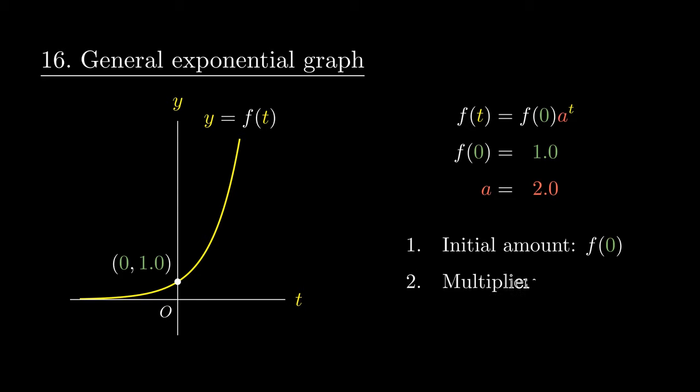Once again, setting a as the multiplier, this helps us calculate the effect of compounding interest. The inverse of the natural exponential graph is the natural logarithm graph.